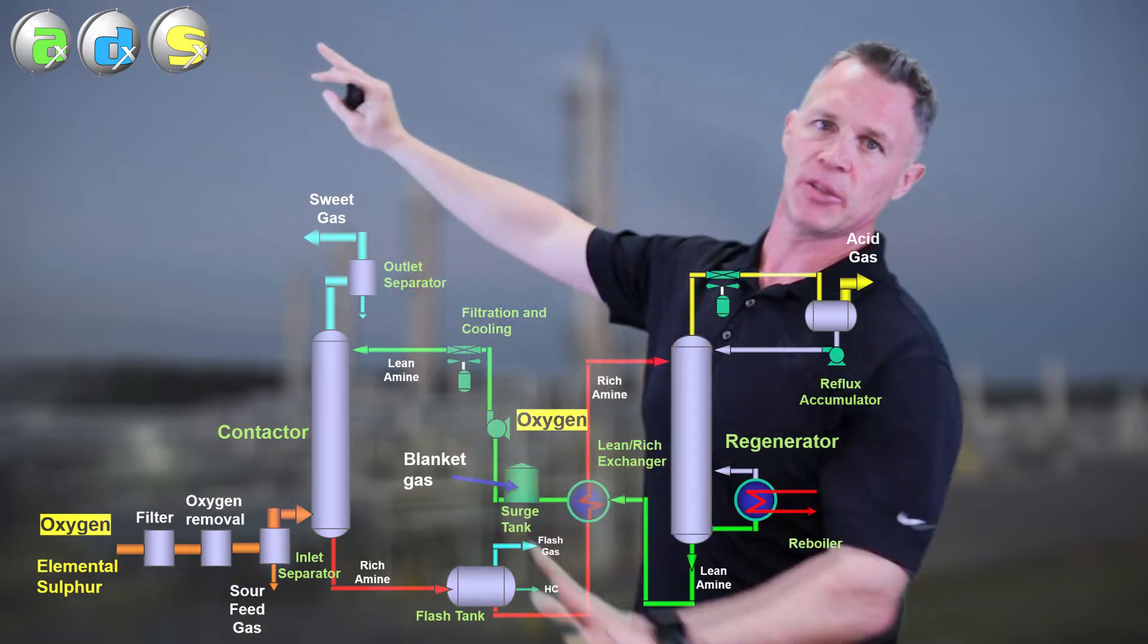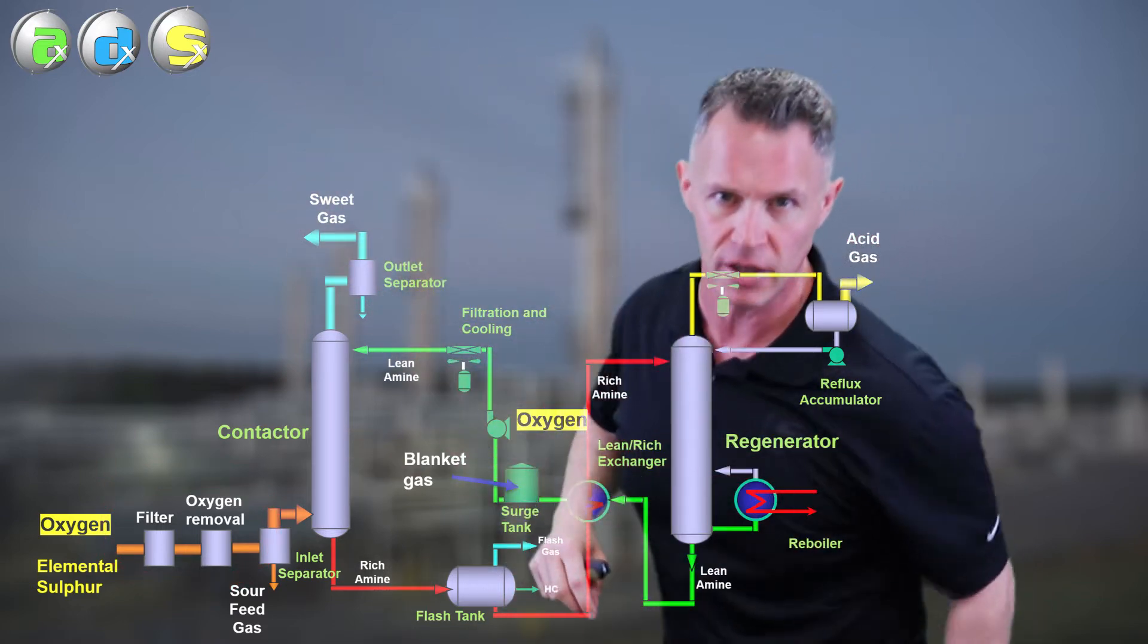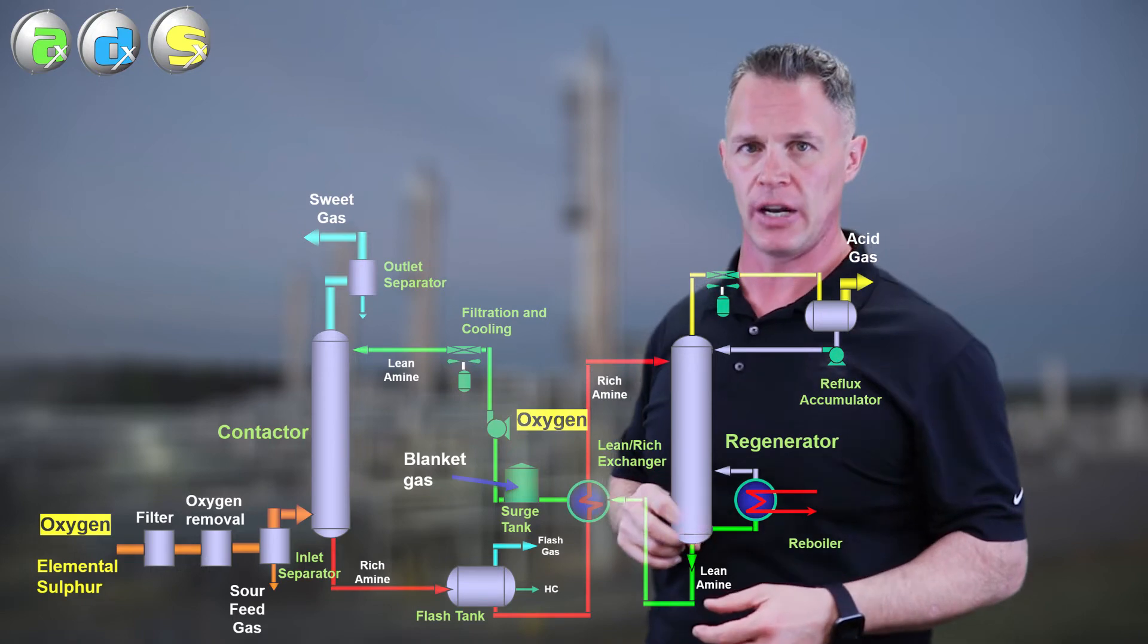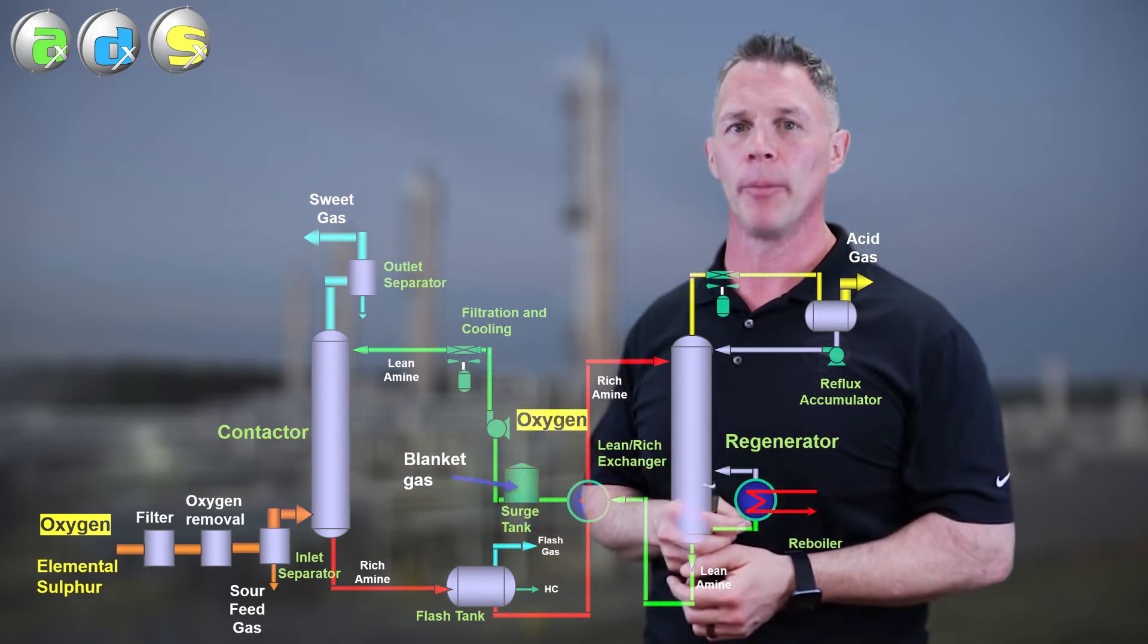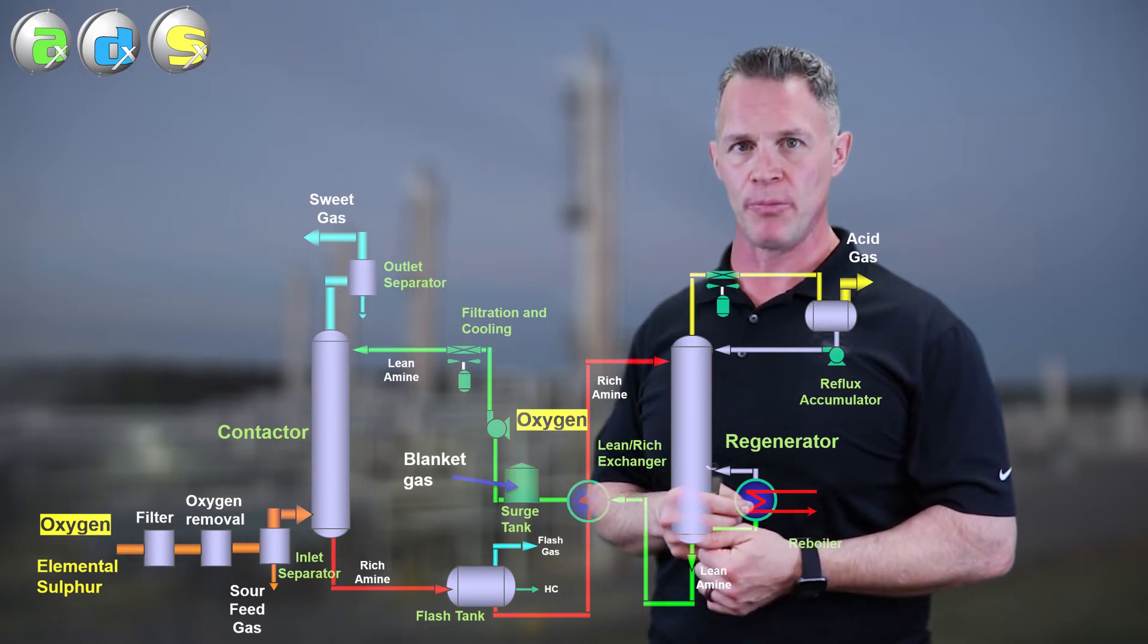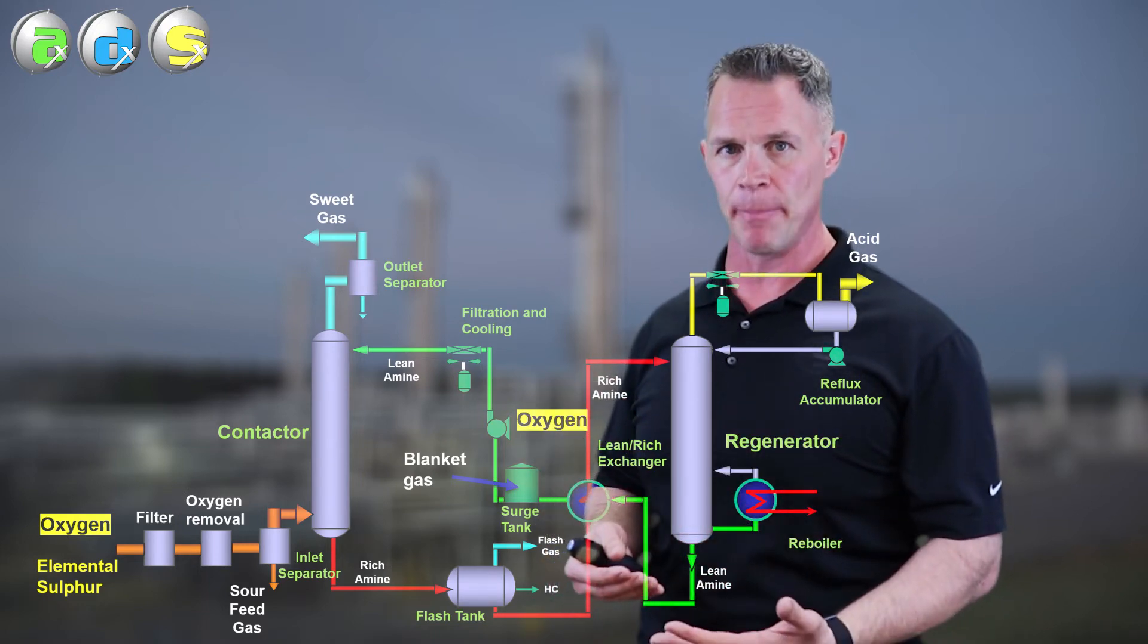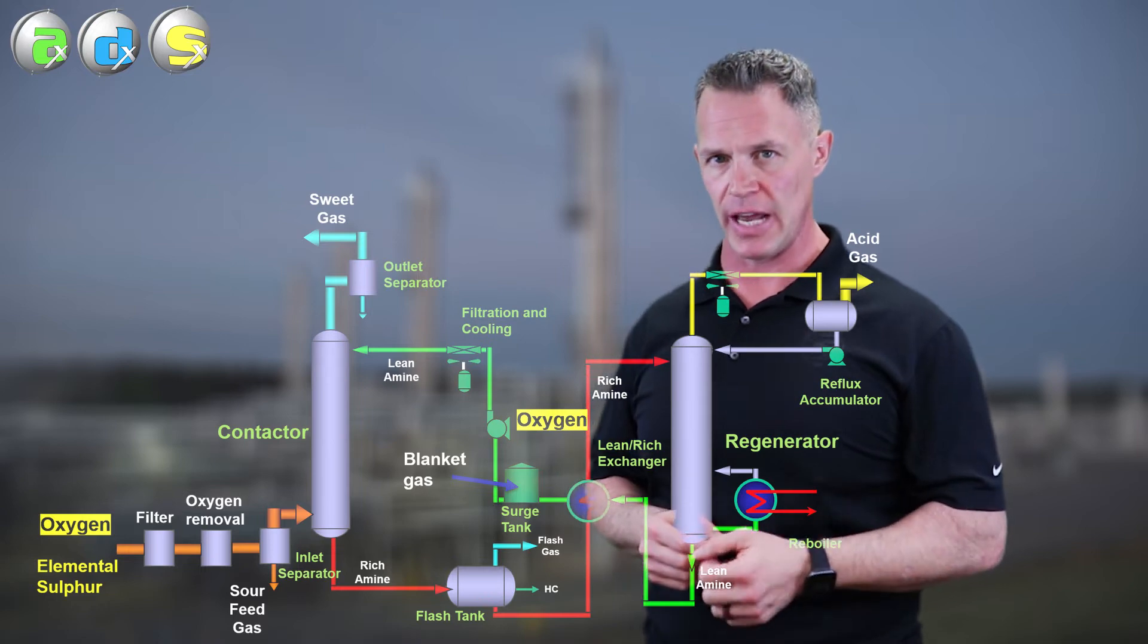We do a lot of work at gas plants here in West Texas. Pretty much all of these have oxygen scavenger technology on them. We know it works. They're not especially complicated. No reason for you to be putting up with constant heat stable amine salt build up if it's due to oxygen in the feed gas.